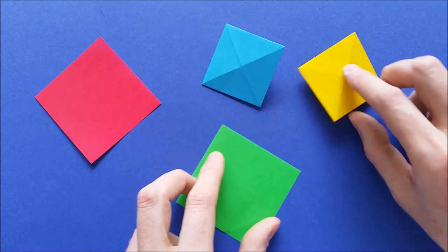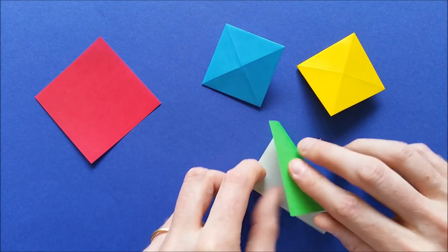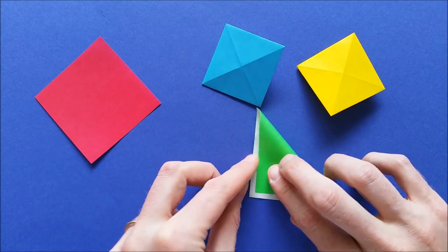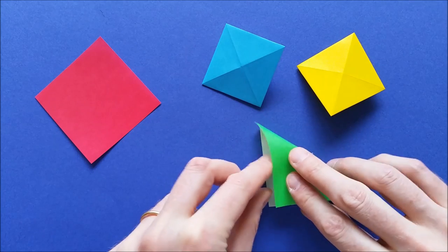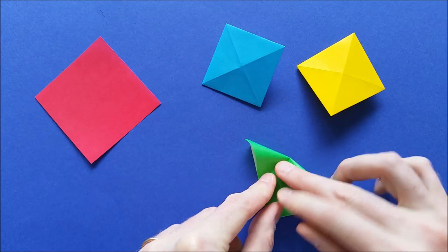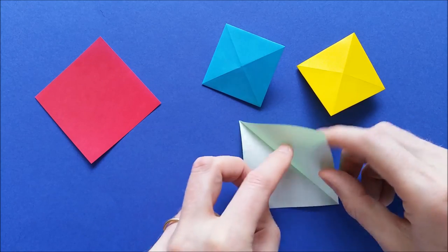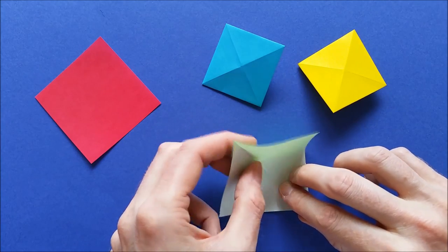You can make another variation by first folding the diagonals. Instead of folding vertically and horizontally, fold the diagonals. Unfold and fold the other diagonal.